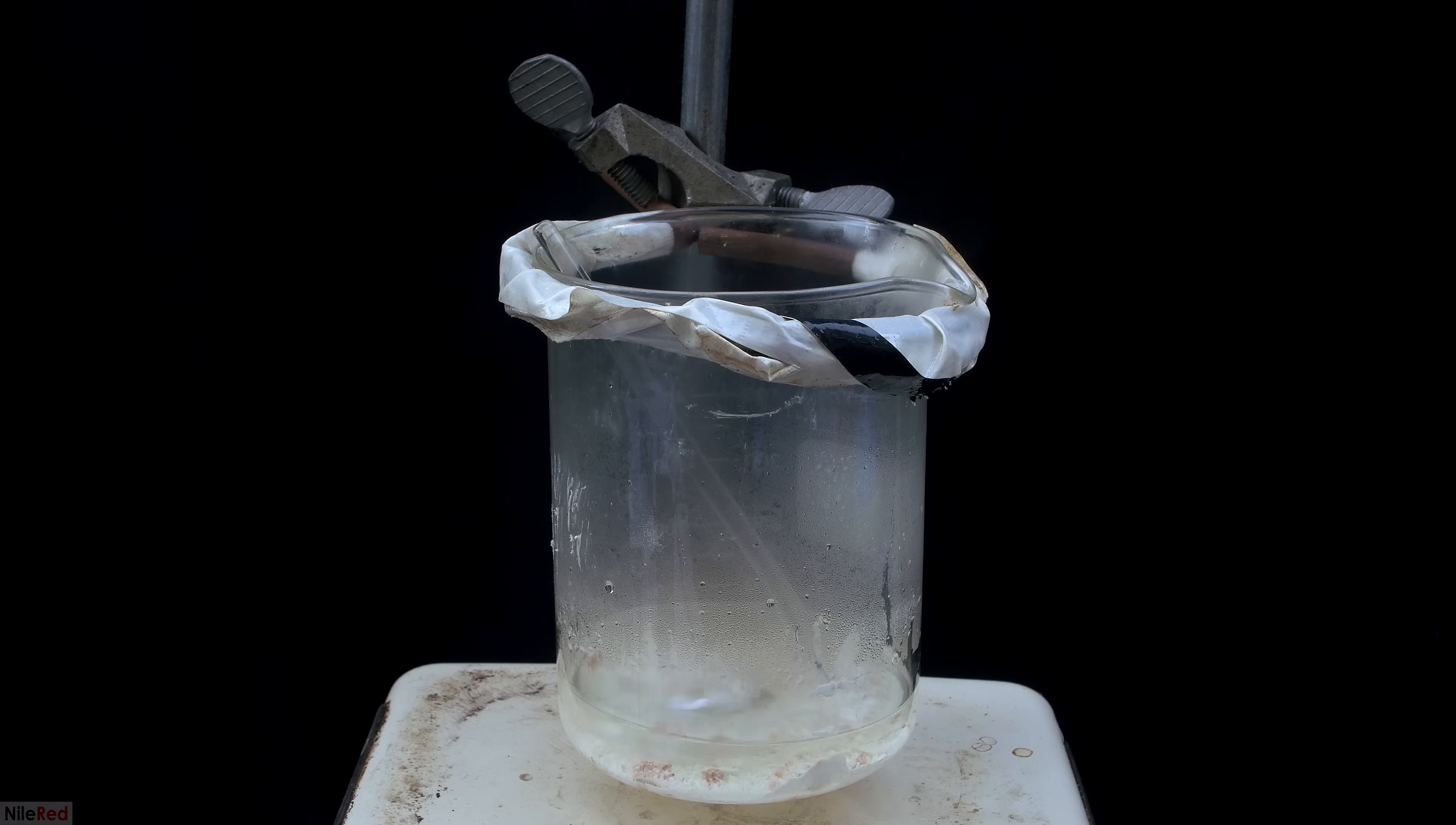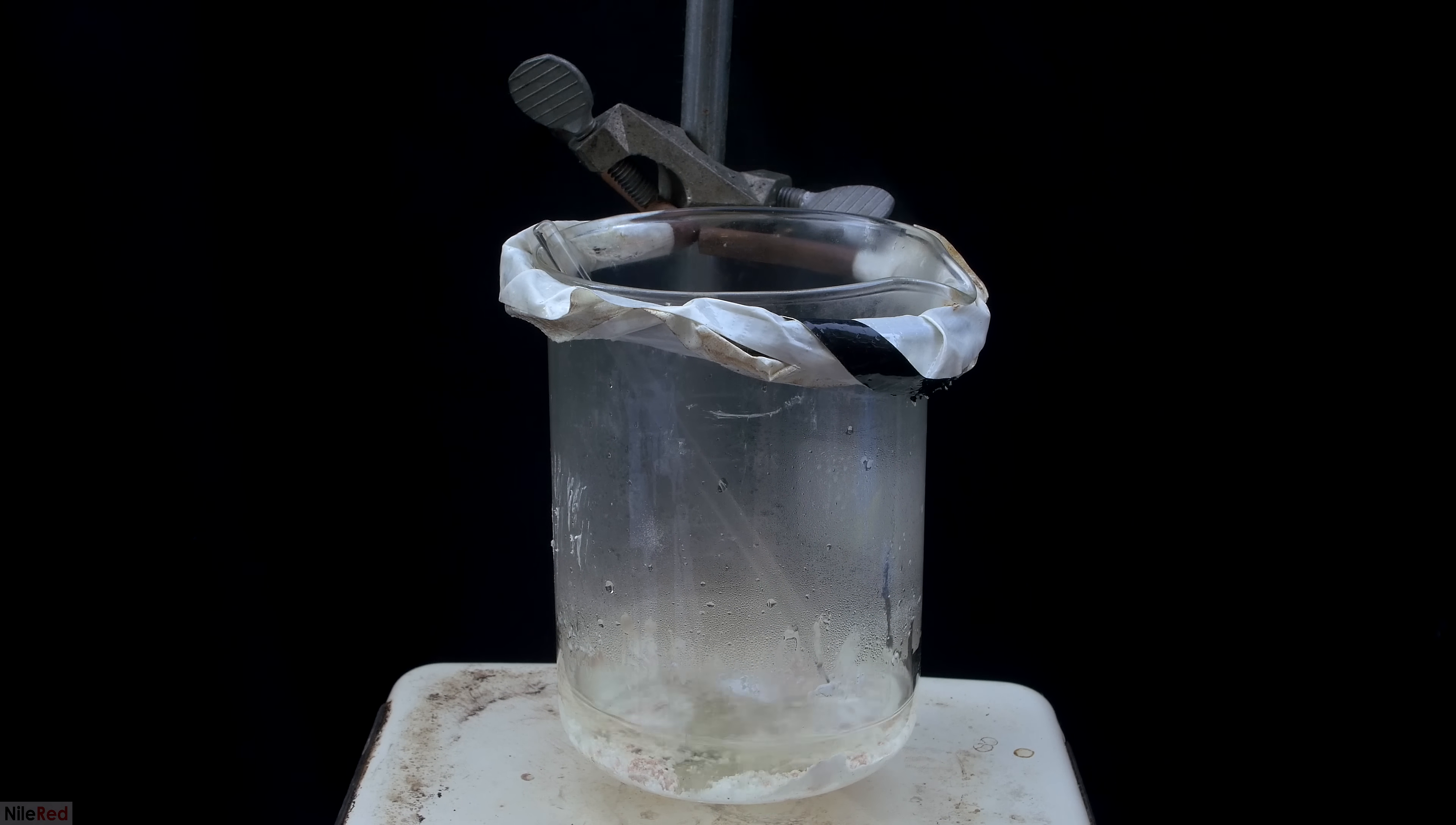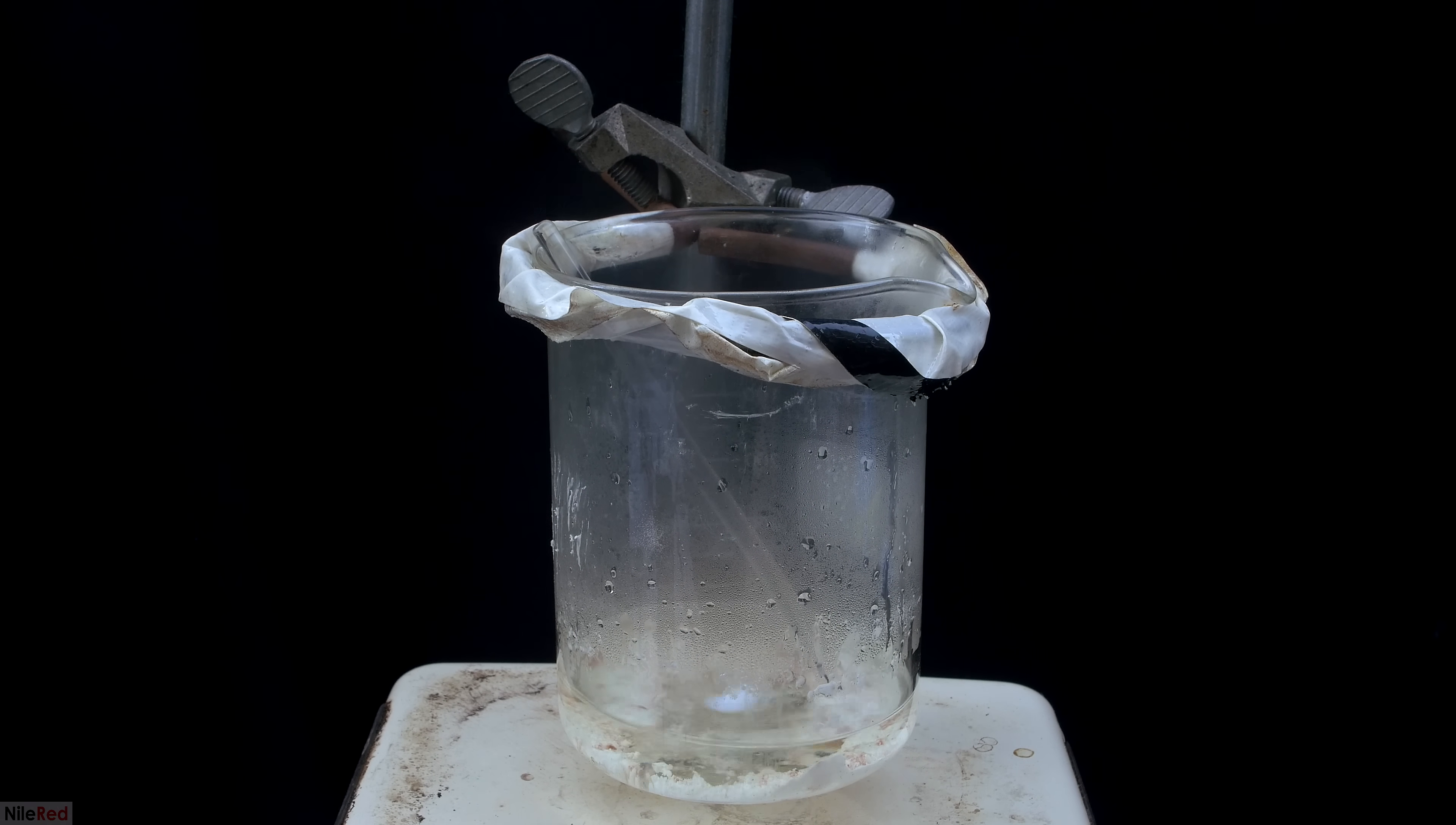Just like before, the beaker is then placed above a hot plate, and we heat things up to get rid of the water. Since we effectively added at most 60 milliliters of water, we're actually above the saturation point of mercuric chloride.